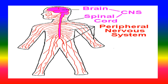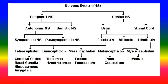Looking at the nervous system in detail: the peripheral nervous system is divided into the autonomic nervous system and the somatic nervous system. The central nervous system is divided into the brain and spinal cord. The autonomic nervous system is further divided into the sympathetic nervous system and the parasympathetic nervous system.